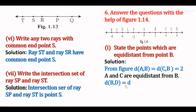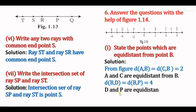Also, distance BD: B is at coordinate 2, D is at coordinate 6, so BD equals 6 minus 2 equals 4 units. Distance BP: B is at 2 and P is at minus 2, so BP equals 2 minus (minus 2) equals 2 plus 2 equals 4 units. So point D and point P are also equidistant from point B.